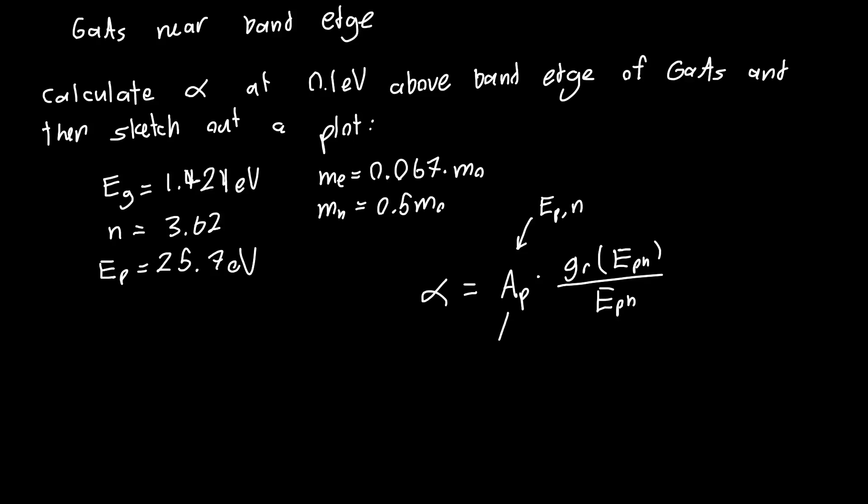And so the first order of business is just to calculate this AP. And we know that AP from the previous video is just equal to pi q squared eta naught h bar EP over 6 times the refractive index times the free electron mass.